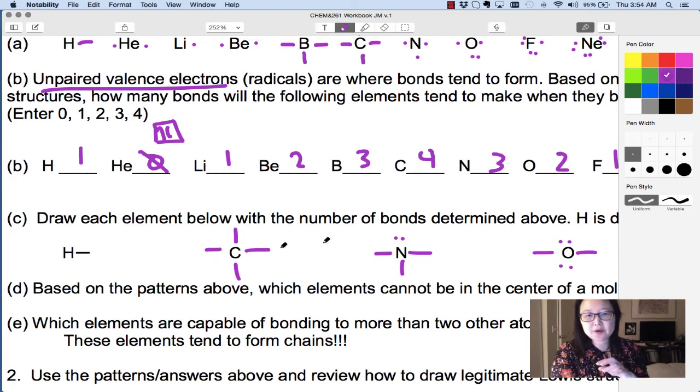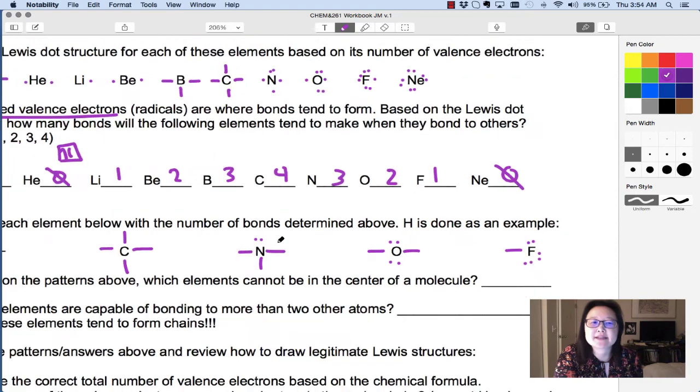Or the duet rule for hydrogen, which only needs 2 electrons in the valence shell. Carbon has 4 bonds times 2, which is 8 electrons. Nitrogen has 2, 4, 6, 8. So all of these have 8 valence electrons.